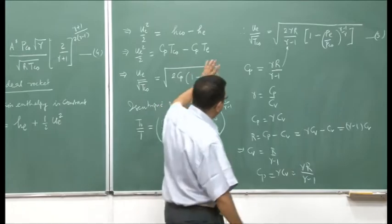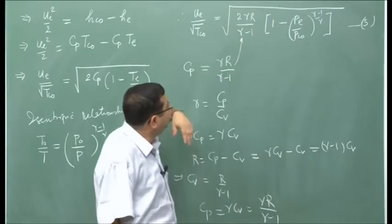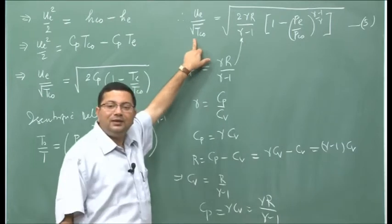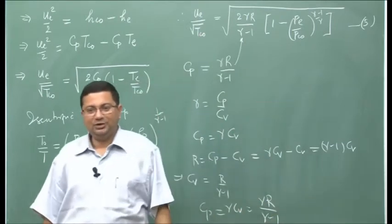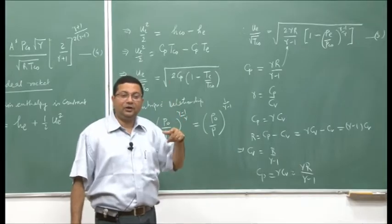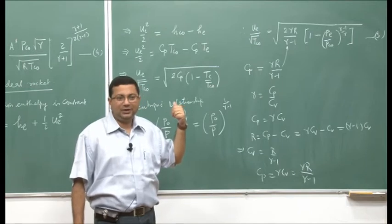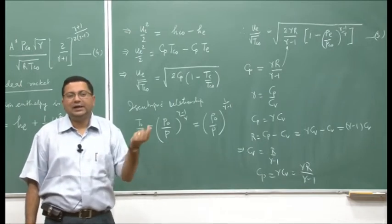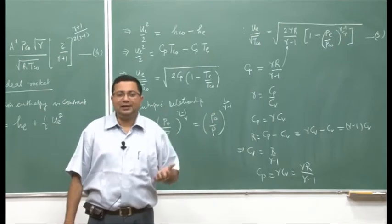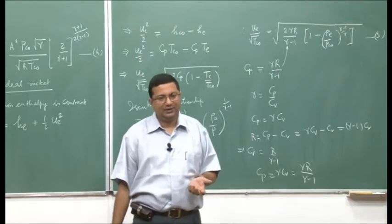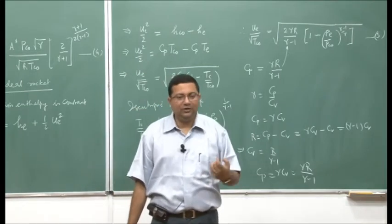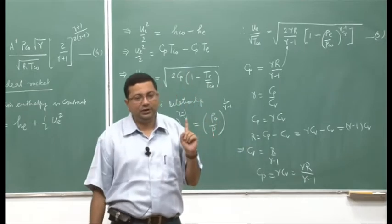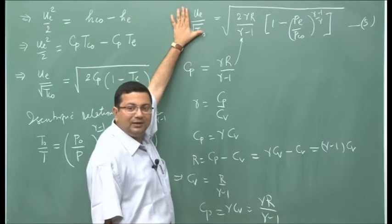This is now our expression for the exit velocity — what we have been trying to obtain. As we can see, exit velocity is a function of fluid properties γ and R, exit pressure, and stagnation temperature and pressure in the combustion chamber. This is the equation that gives us the exit velocity needed to estimate thrust. That is why we followed this process — this is what goes into the thrust calculation.